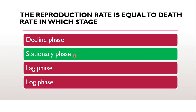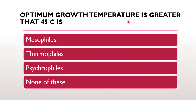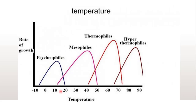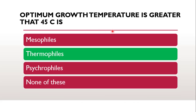Next question: optimum growth temperature greater than 45 degrees Celsius — are they mesophiles, thermophiles, psychrophiles, or none? As you can see in the image, in the temperature range of 40 to 70 degrees lies the thermophiles. So the correct answer is thermophiles — optimum growth temperature greater than 45 degrees Celsius is characteristic of thermophiles.